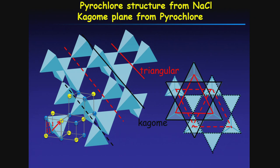My message is: sodium chloride structure is quite a common structural category, and from it I can create all the family of triangular-based frustrated lattices. So to theory colleagues: take it easy — whatever structure you create theoretically, we can make it experimentally. I think in this first part, let me stop here and take questions.